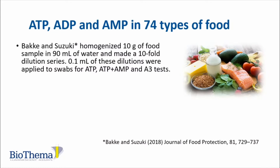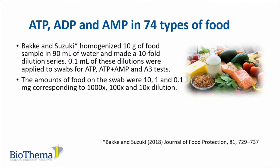Bakke and Suzuki homogenized 10 grams of food sample in 90 milliliters of water and made a 10-fold dilution series. 0.1 milliliter of these dilutions were applied to swabs for ATP, ATP plus AMP, and A3 tests. The amounts of food on the swab were 10, 1, and 0.1 milligram, corresponding to 1, 10, and 110 times dilution.